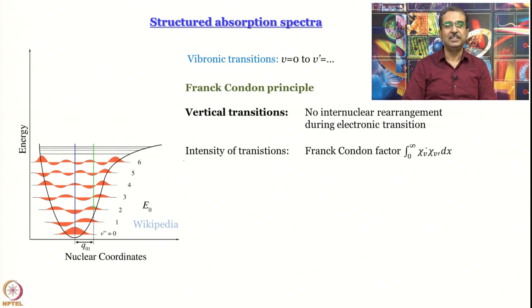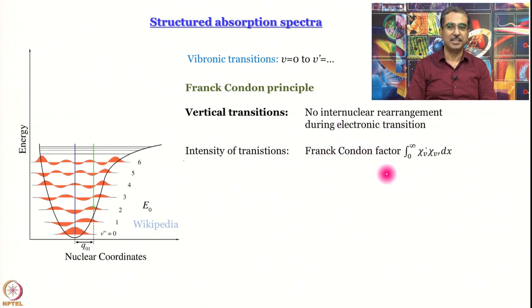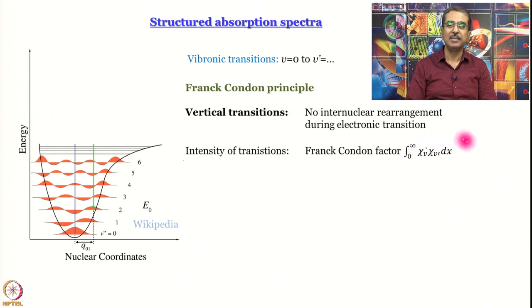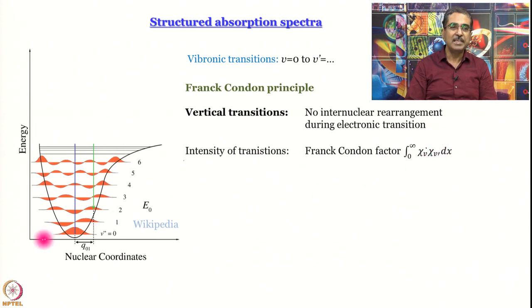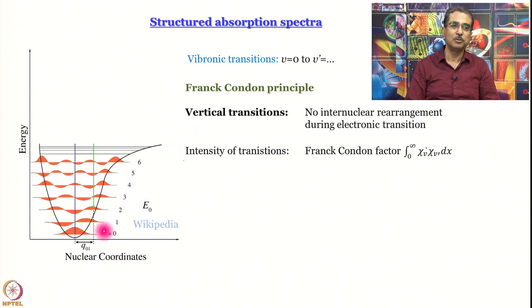The quantum formulation states that the intensity of a transition is governed by the Frank-Condon factor, which is the integral of χ_v' and χ_v — the vibrational wave functions. Energies are quantized; vibrational quantum numbers range from 0, 1, 2, 3, and so on. What we are showing here is an anharmonic oscillator — essentially the potential energy surface for an actual diatomic molecule. The energy gaps keep decreasing until they become a continuum.